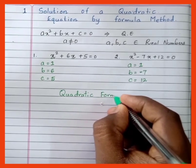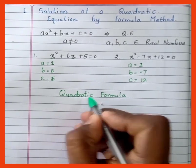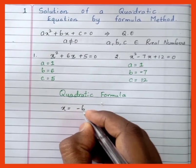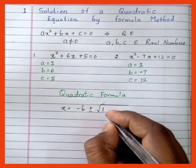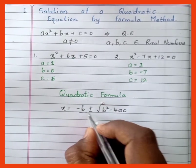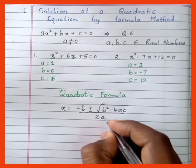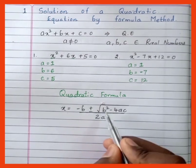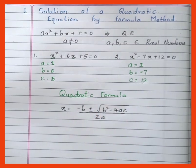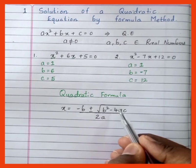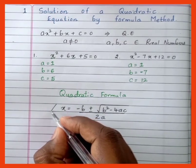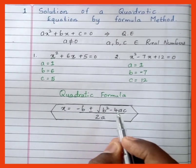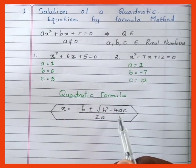Now, what is the quadratic formula? The quadratic formula is given by: x = (-b ± √(b² - 4ac)) / 2a. This is called the quadratic formula. Try to memorize this formula and try to write it at least 5 to 10 times so that you remember it.